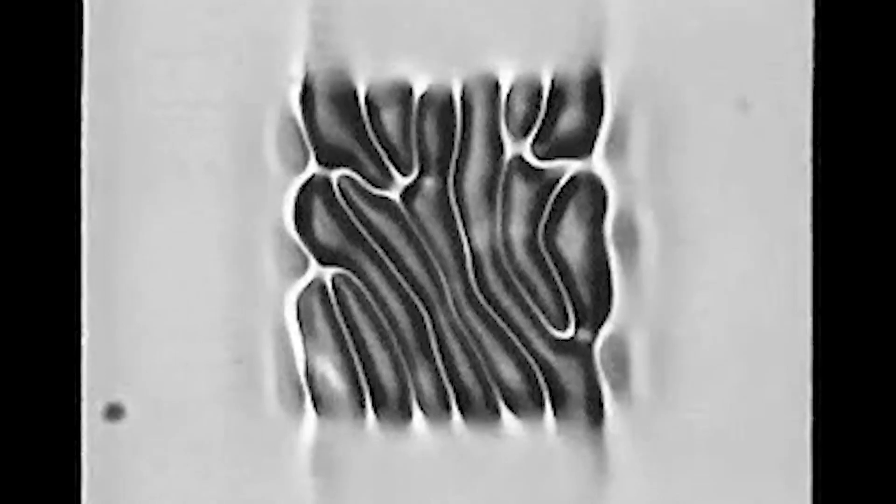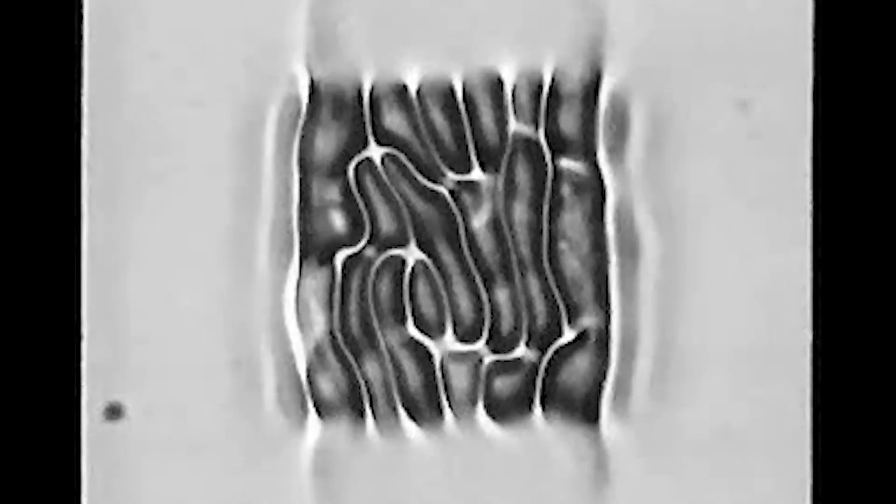As we keep increasing the voltage, that structure becomes unstable and you start to see motion. You start to see this structure oscillating around and it starts to become disordered.